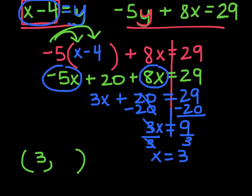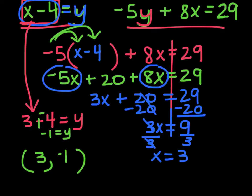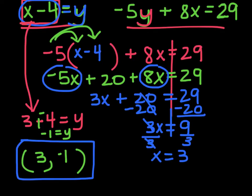I still need to find the y coordinate. I can plug x back into either equation — I'll choose the easier one, which says y equals x minus 4. Substituting x equals 3: 3 minus 4 equals y. Adding the opposite, y equals negative 1. So the solution to this system of equations is the point (3, negative 1) — that's where the two lines cross.